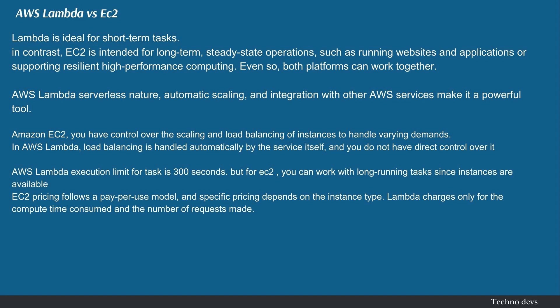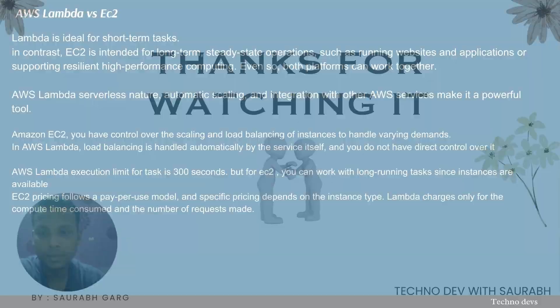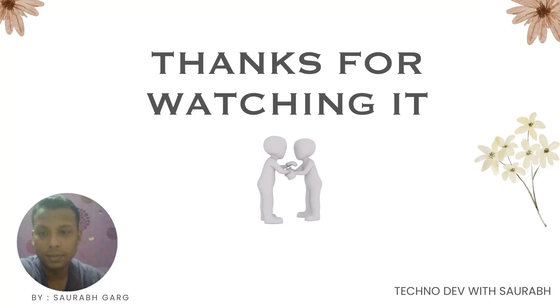AWS Lambda has an execution limit of 300 seconds per task, but with EC2 you can work with long-running tasks since instances are always available. EC2 pricing follows a pay-per-use model and specific pricing depends on the instance type, whereas Lambda charges only for the compute time consumed and the number of requests made.